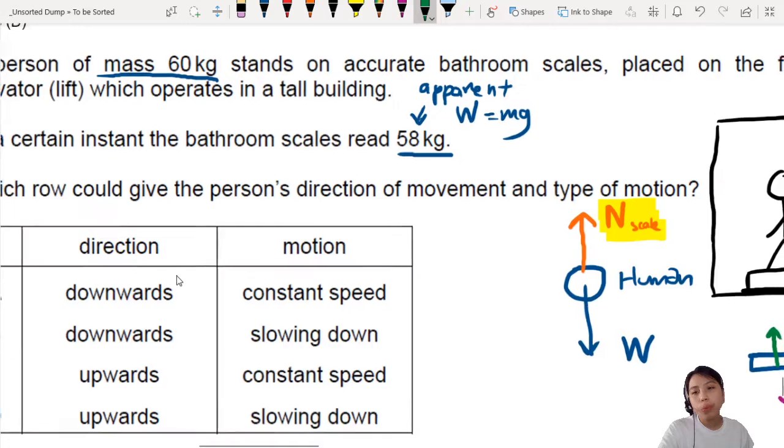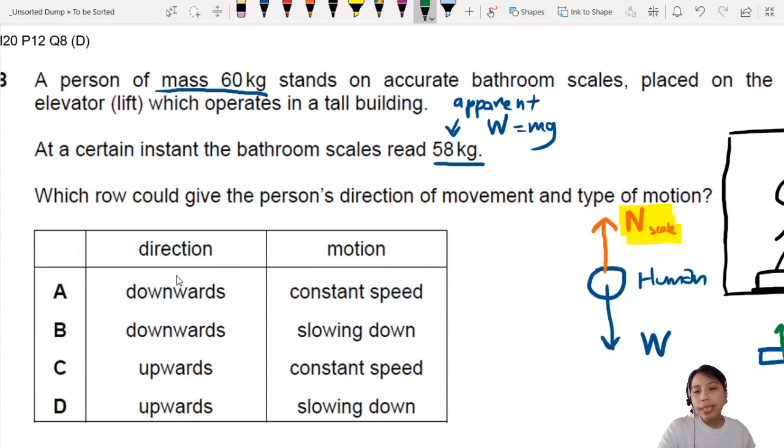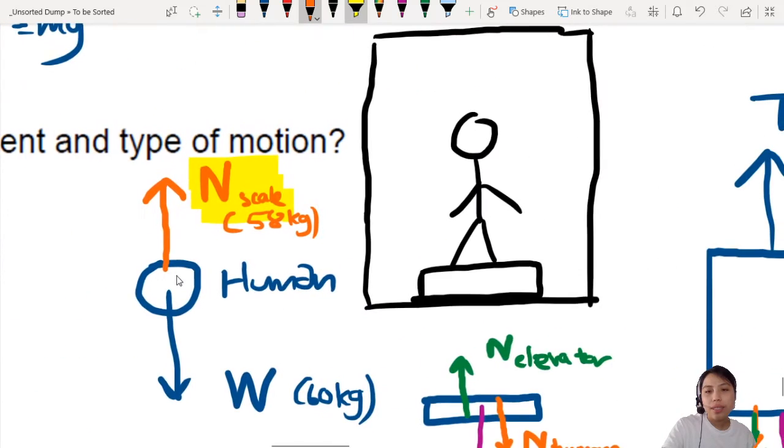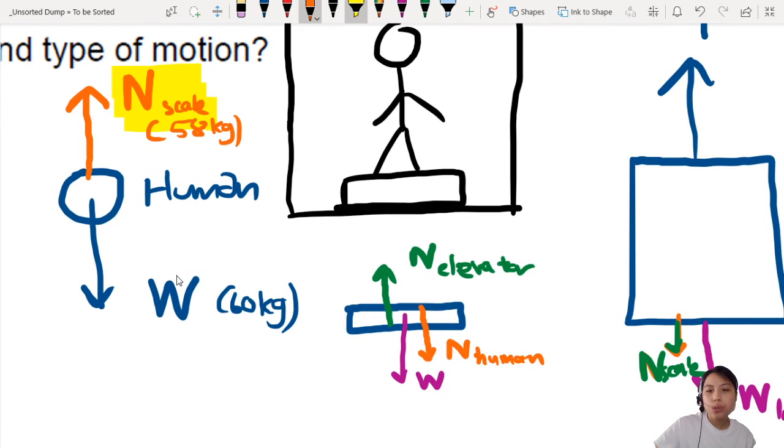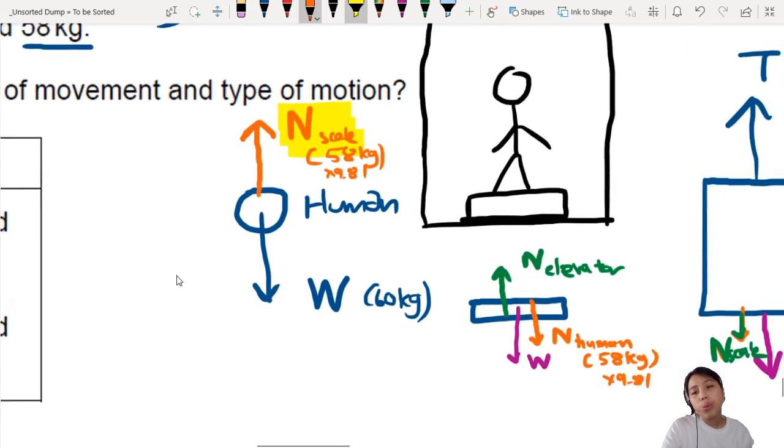Because we are looking at why the human weighs a certain thing. So weight is the actual weight, 60 kg. What is actually measured though is the 58 kg. So that will be this one. Because that is what the normal contact force is, which is also what is pressing down on the scale itself. That's what it shows. 58 kg times 9.81. Let's put that 9.81.